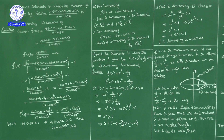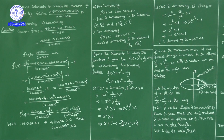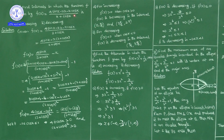Hello students. Now we are discussing applications of derivatives, miscellaneous exercise. Up to question number 5 we discussed. Next, question number 6: find the intervals in which the function f(x) = (4sinx − 2x − x cosx) / (2 + cosx) is increasing and decreasing — in which interval is this function increasing and in which interval is it decreasing?